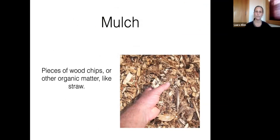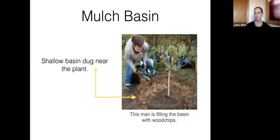Now let's get into details about the system. First: mulch. We use wood chips in these simple graywater systems as a natural in-ground filter that catches all the lint and debris in the graywater, allows the water to soak into the soil, prevents clogging and runoff, builds soil, and adds organic matter. We create what's called a mulch basin — near your plant, you dig a basin six to twelve inches deep and fill it with wood chips. The graywater filters through the wood chips, hits the soil, soaks down, and the plant roots can access it.